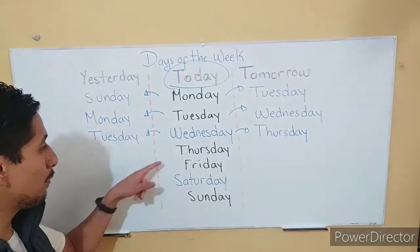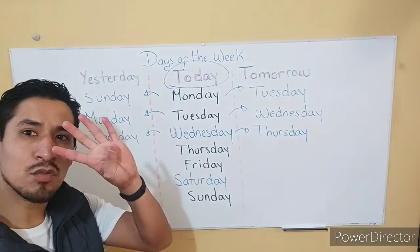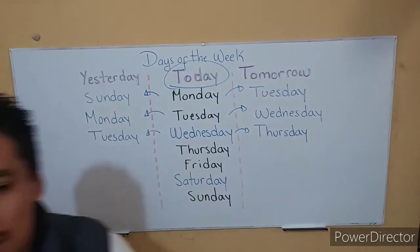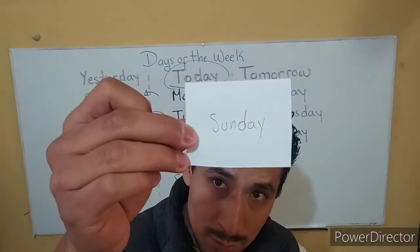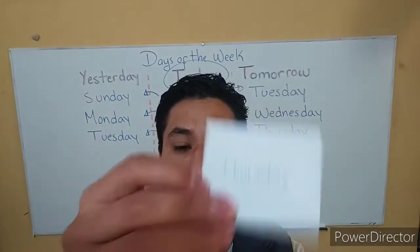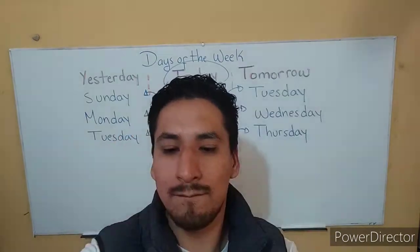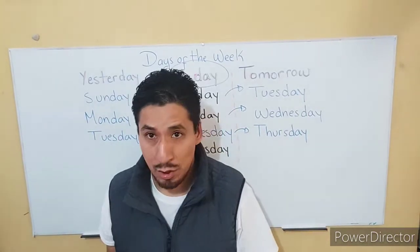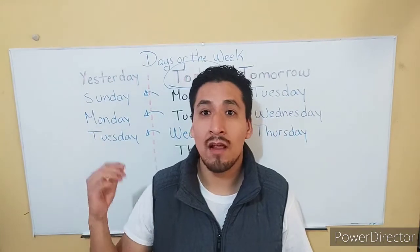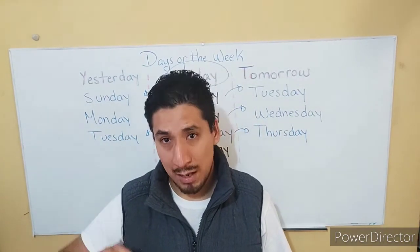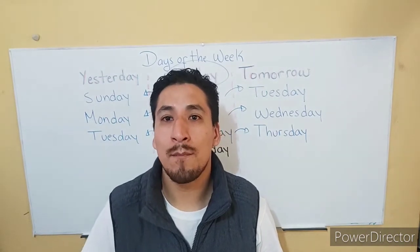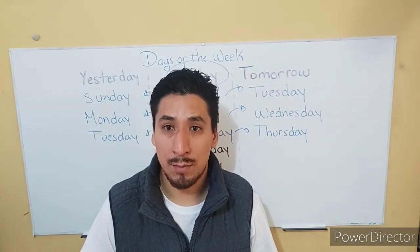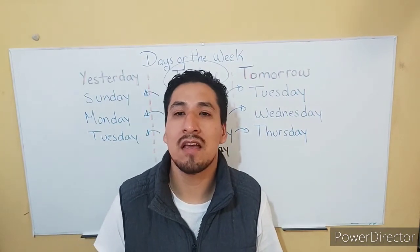Ahora, ustedes van a completar los que nos hacen falta. Ya hicimos tres, nos faltan cuatro. Excellent. And you are going to do one more thing. Remember the little papers that I showed you? Sunday, Thursday, Friday, Saturday. Les voy a enviar unos ya con los nombres, tanto en inglés como en español, para que tengan un memorama. Los van a recortar y los van a poner. Remarcar bien las letras para que hagan un memorama en inglés y en español, y puedan jugar con sus compañeros ahí en su casa, con sus papás, con sus hermanos, con sus primos, para que ustedes aprendan completamente cuál es el día en inglés y en español.